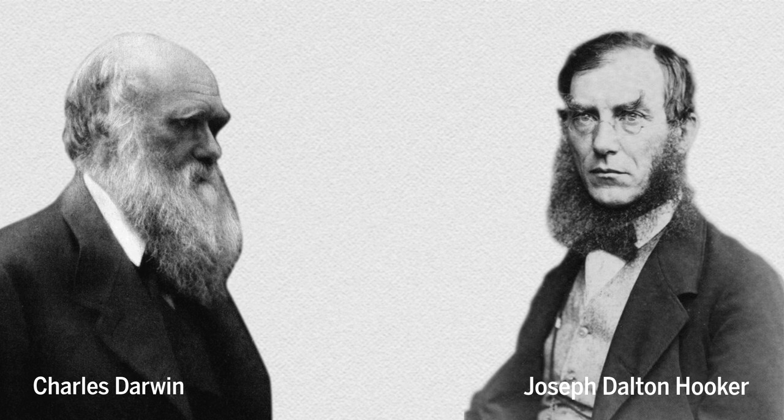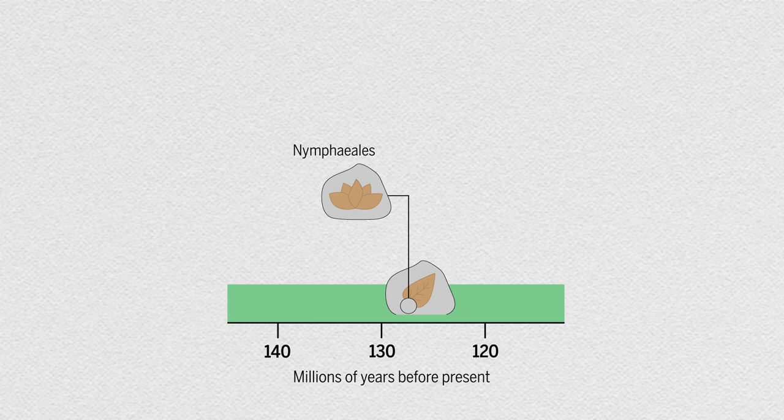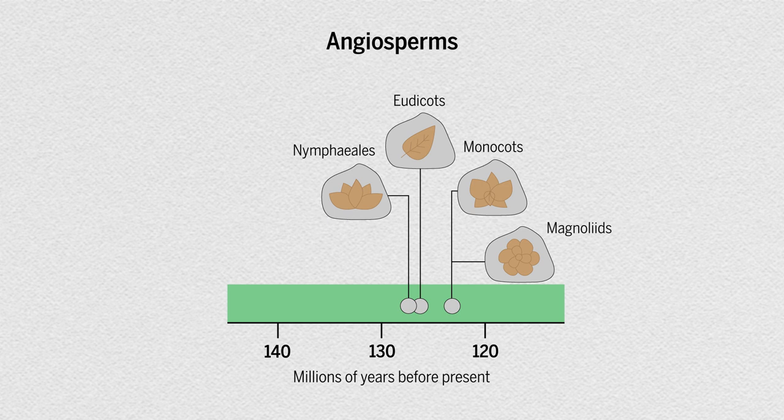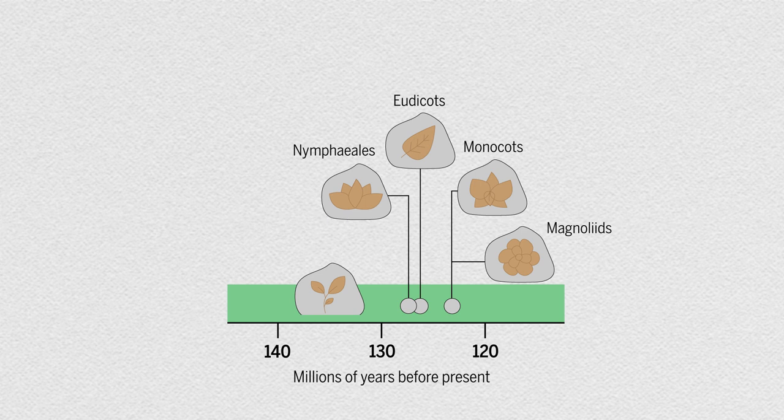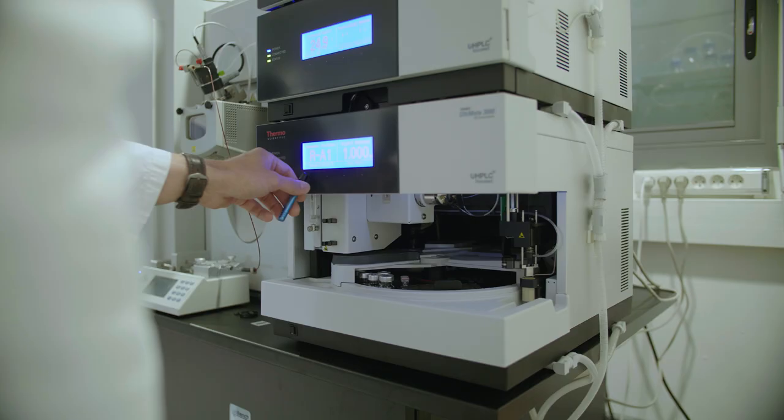In 1879, Charles Darwin wrote to his colleague Joseph Dalton Hooker about an abominable mystery in the fossil record. He was perplexed at how rapidly major families of flowering and fruit-bearing plants, known as angiosperms, emerged during the Cretaceous over the span of just 10 million years. The oldest known fossils of angiosperms date to around 135 million years ago, about 10 million years before this explosion of diversity.